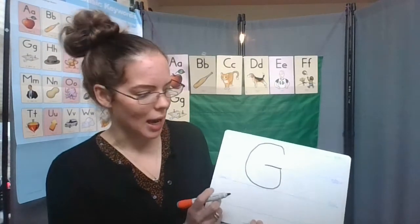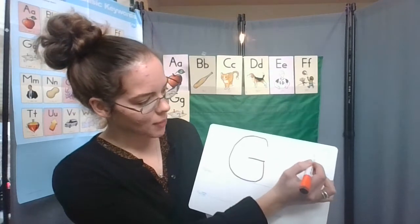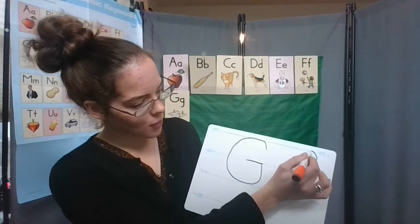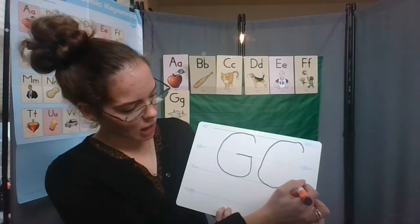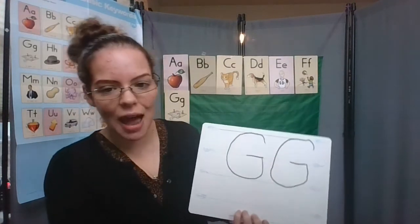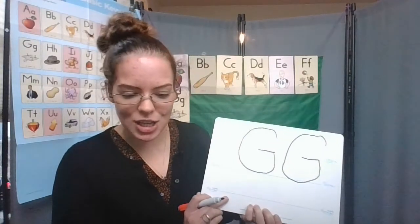Let's try big G one more time. To make uppercase G, start near the top, curve around and down to the bottom, keep curving up to the middle, and then a straight line halfway across. That's uppercase G.